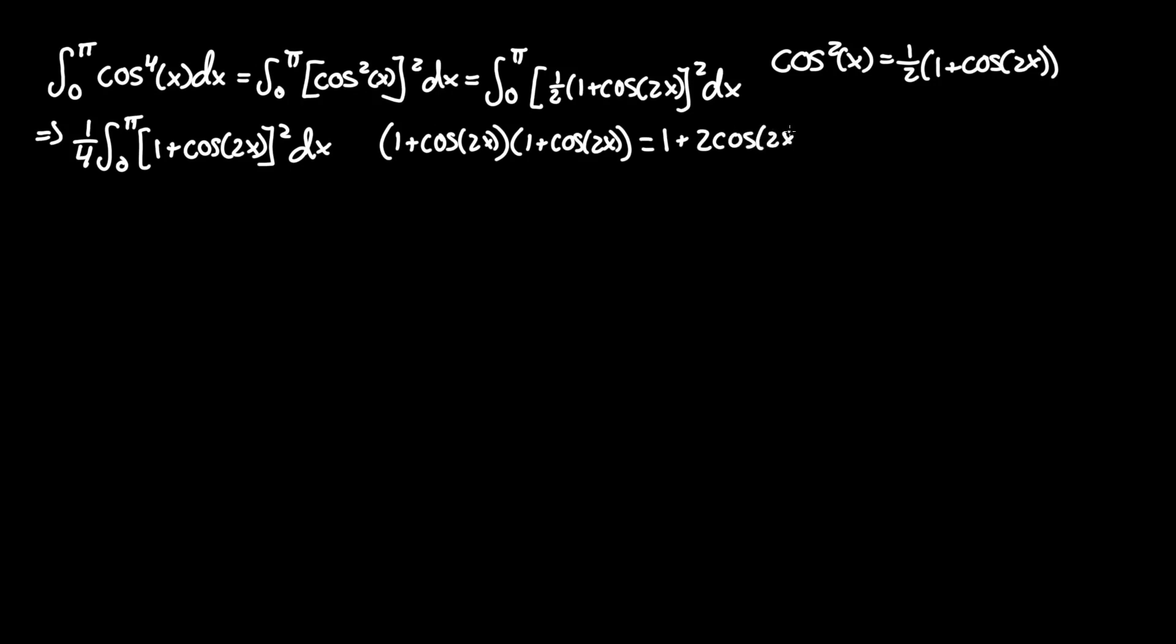plus cos(2x) times cos(2x) is cos²(2x). That's what's inside this term.